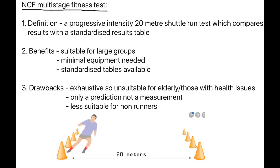The second method is the NCF multi-stage fitness test. This is a progressive intensity 20-metre shuttle run test which compares results with a standardised results table. The benefits are it is suitable for large groups, minimal equipment is needed, so it's cheap, and standardised tables are readily available online. The drawbacks are it's an exhaustive test, unsuitable for the elderly and those with health issues, it is only a prediction not a measurement, and it's less suitable for non-runners.